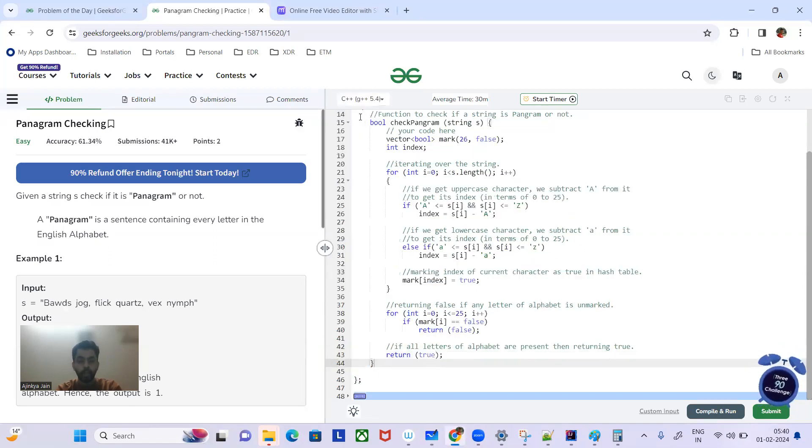Let's quickly see the C++ code as well. So everything is the same except this vector array we are taking as boolean array. Rest, everything is same.